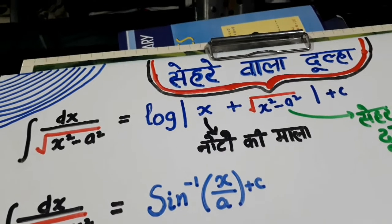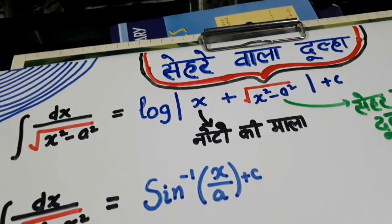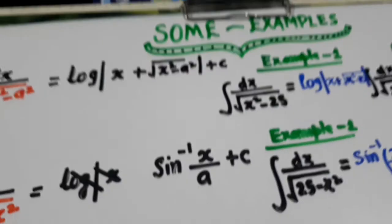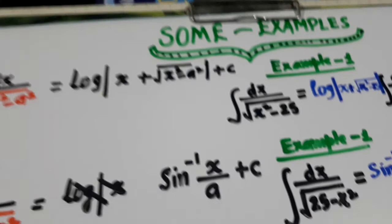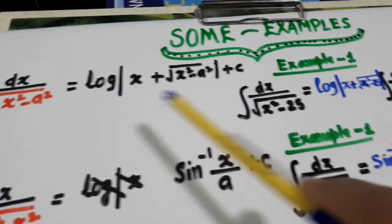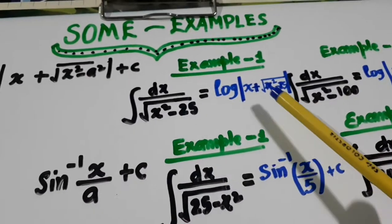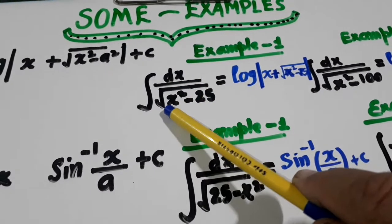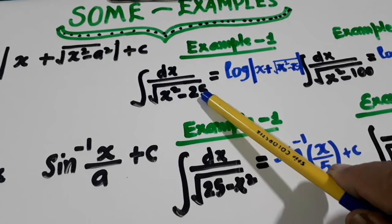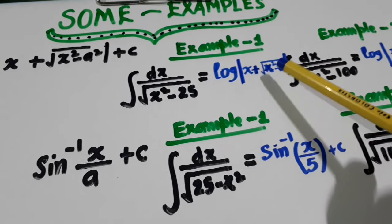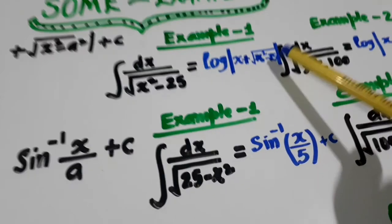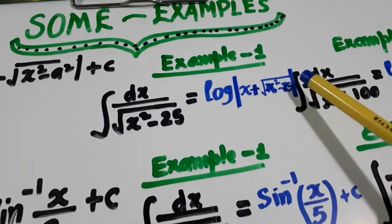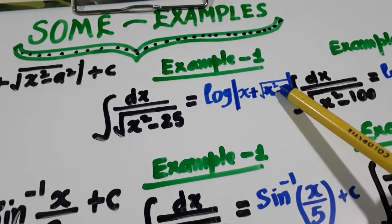Now let us take a few examples so you will understand better. This is the formula. Example number one: integration of dx over square root of x square minus 25. The answer is log of x plus square root of x square minus 25. You just apply log and add x to the expression inside — add the dula.